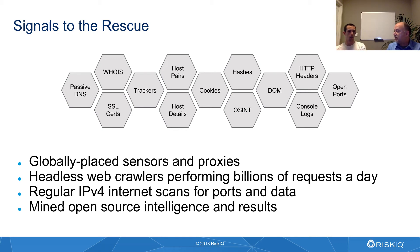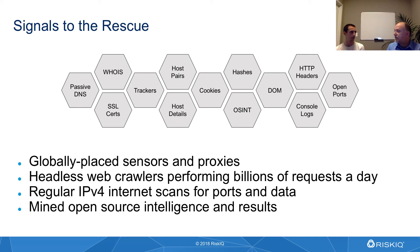If you pair the concept of our web crawler and our ability to tune them to look like anything we want, along with our globally placed sensors, we really have a powerful capability. It's also important that if we simply relied on performing crawls and seeking things online, we may miss a lot. So we've instrumented ourselves to perform regular Internet scans on a routine basis. We're looking at all of the IPv4 space, scanning for over 100 open ports and collecting the banners and headers. We're also collecting open source intelligence results and mining that information as well, giving us a nice signal map of what's out there on the Internet.